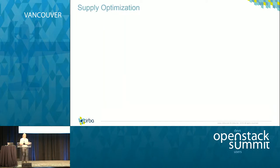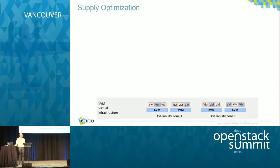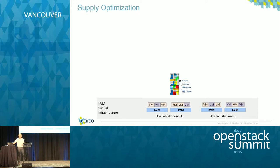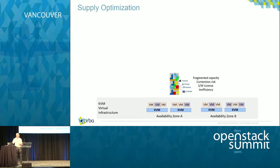Let's talk about supply optimization before we get into demand optimization and optimizing the density of these virtual environments. If we take a simplistic look at a KVM virtual infrastructure — different availability zones, the KVM hosts and the VMs — what a typical environment looks like is somewhat fragmented, with every one of those workloads having a requirement. The fragmented capacity creates potential contention risk and inefficiencies in terms of software licenses and what's running where.